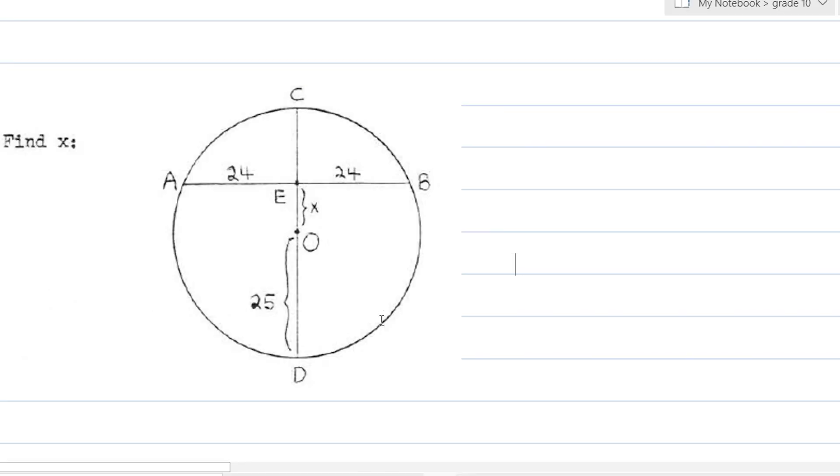Let's apply theorem number two. And for this one, let's solve for X. We have a chord AB that's 48 units. And then diameter that bisects it is perpendicular. This is 25 units. And we're going to solve for this X, EO. We're going to look for EO.